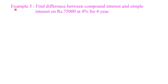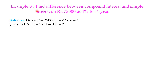Today, example number 3: Find the difference between compound interest and simple interest on Rs 75,000 at 4% for 4 years. In this example, the given information are: P is equal to 75,000, rate of interest r is equal to 4%, number of terms n is equal to 4 years. We have to find the difference between compound interest and simple interest, that is, CI minus SI.